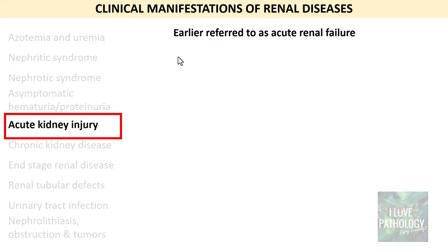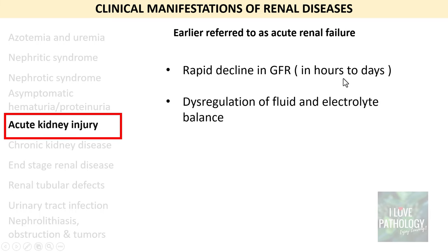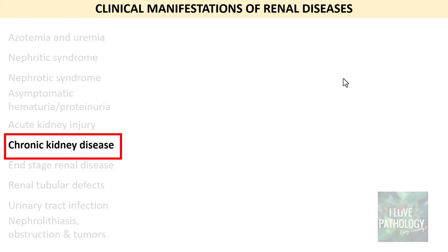Moving on to acute kidney injury — it was earlier referred to as acute renal failure, now replaced as AKI. There is a rapid decline in glomerular filtration rate within hours to days, leading to dysregulation of fluid and electrolyte balance and retention of metabolic waste products, including accumulation of urea and creatinine. The cause could be glomerular pathology, vascular pathology, or tubular pathology.